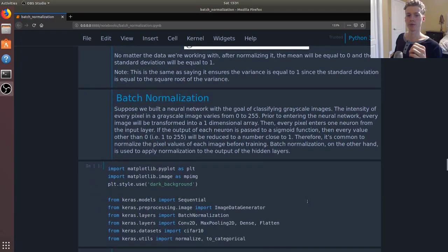Batch normalization is essentially normalizing your data at every hidden layer. Let's say that we had a grayscale image. The pixels in the grayscale image would vary in intensity from zero to 255.